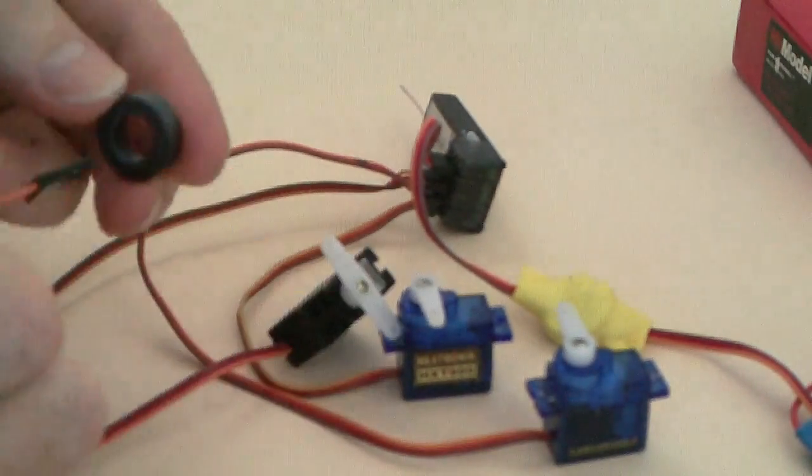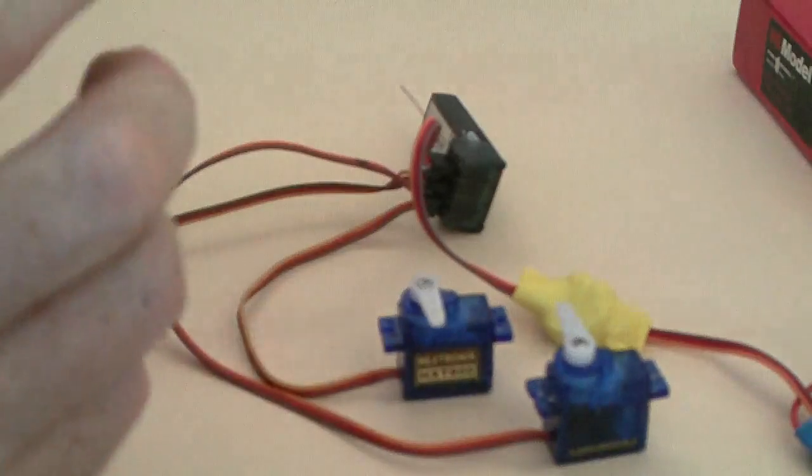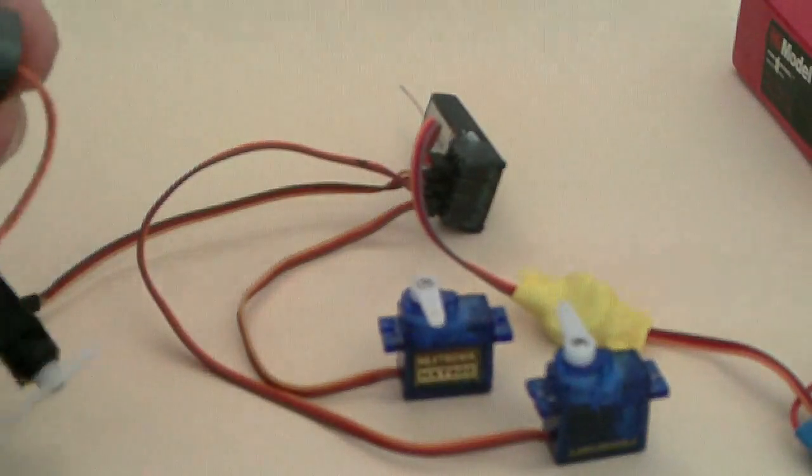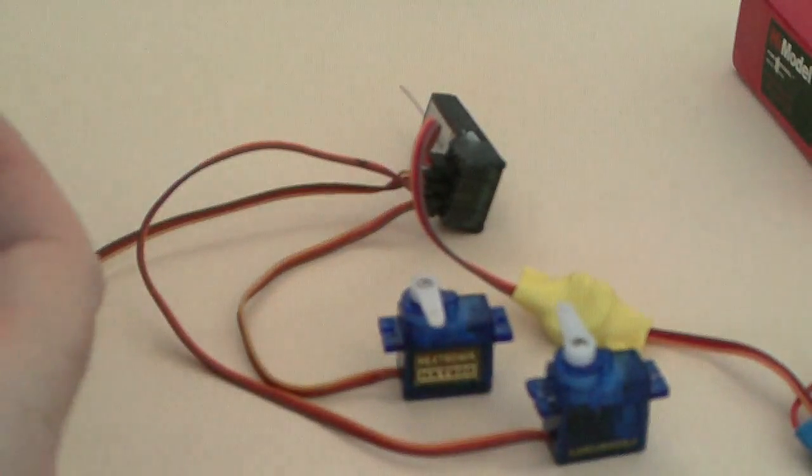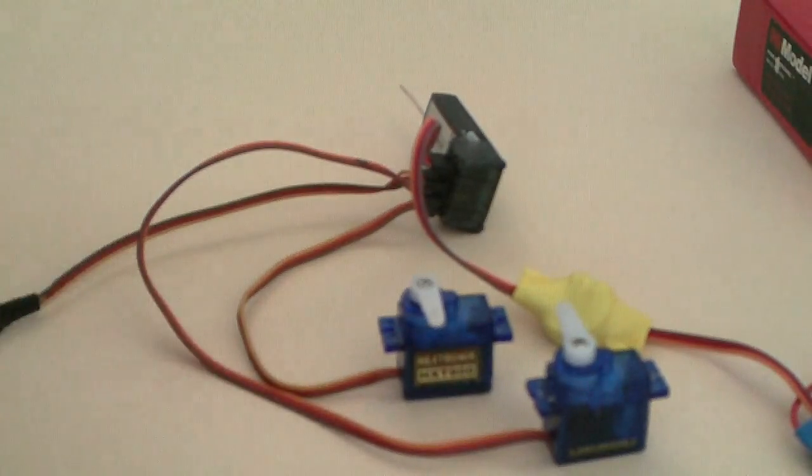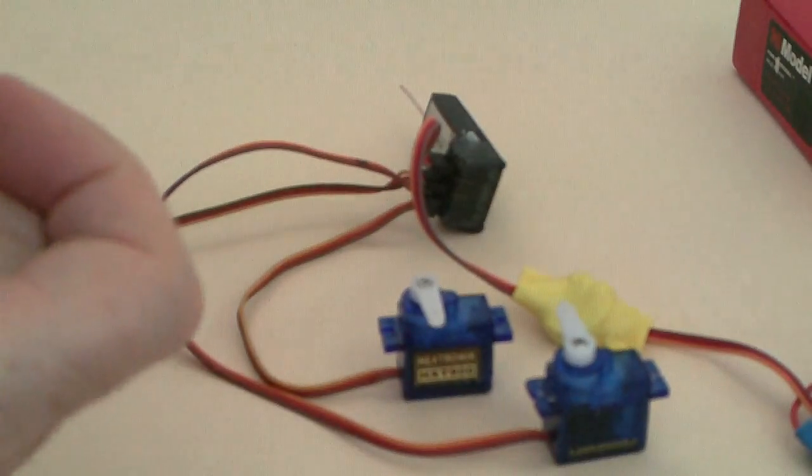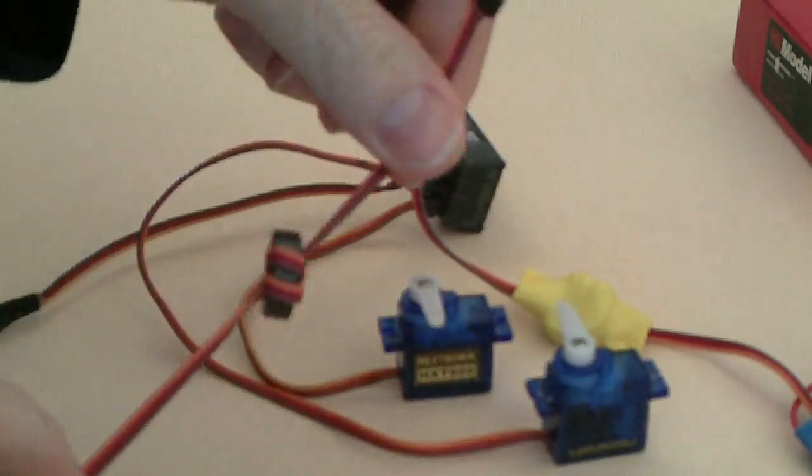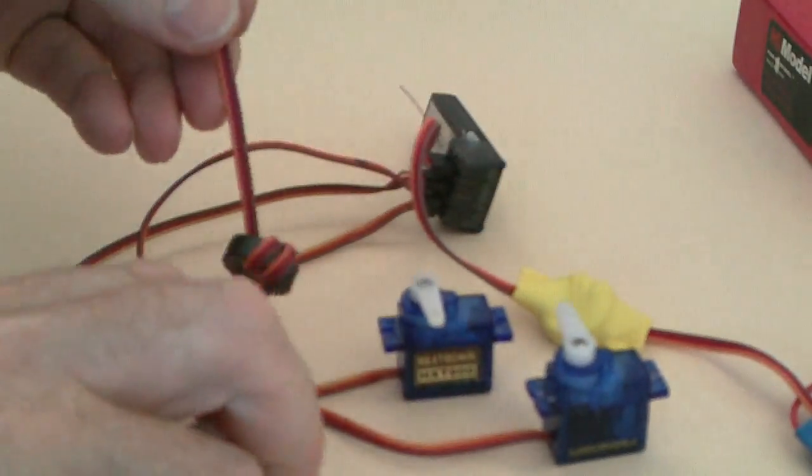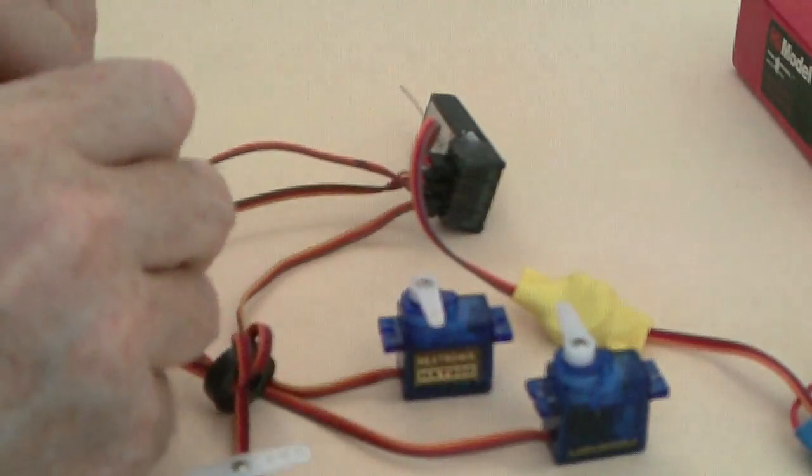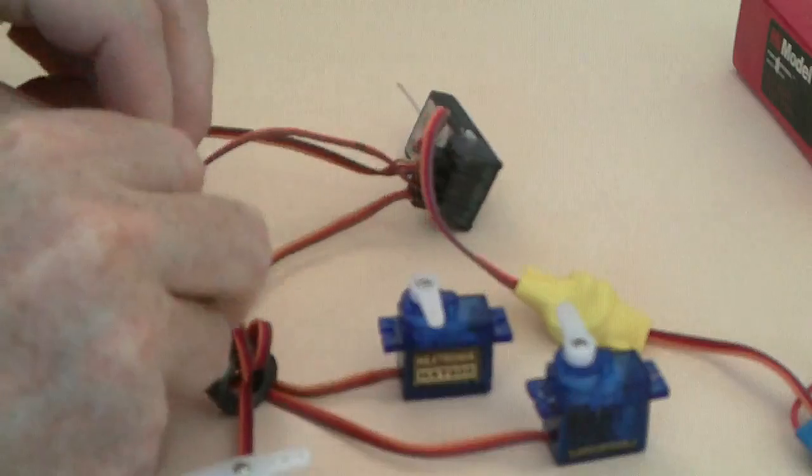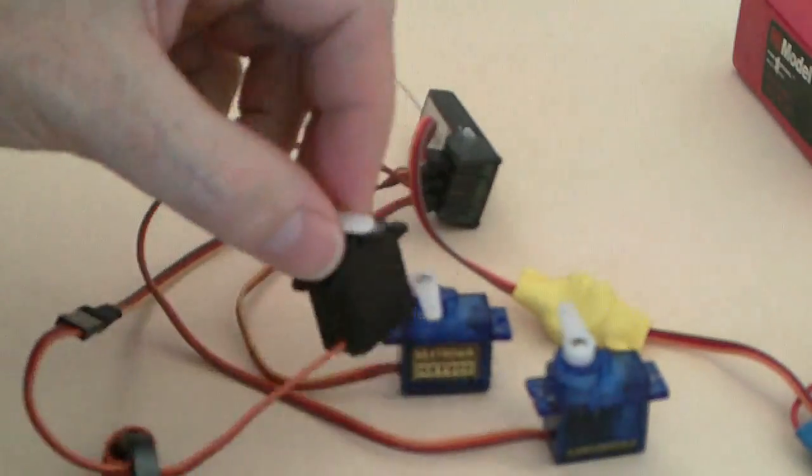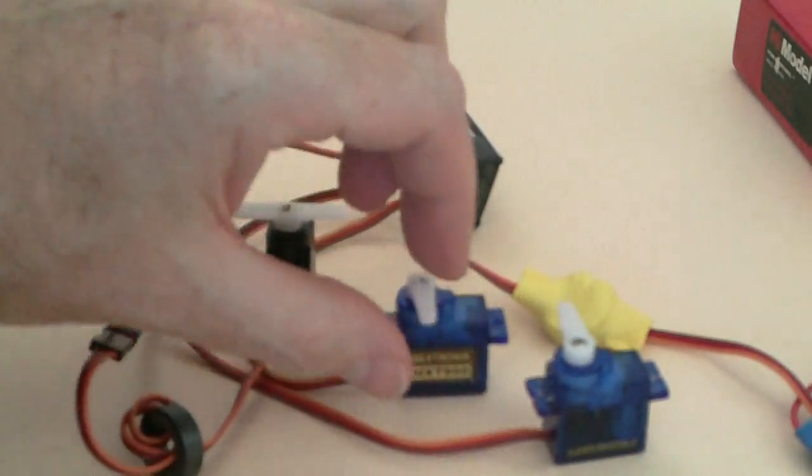So unplug that, wrap that core around there. We'll put three turns through, so that's one, two, three. Yeah, so that's quite simple. Plug it back in now, knocking all those over.